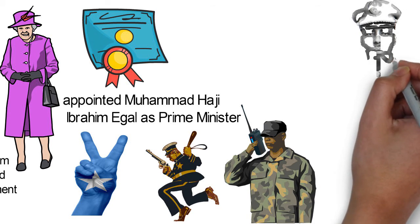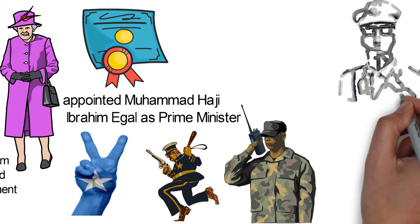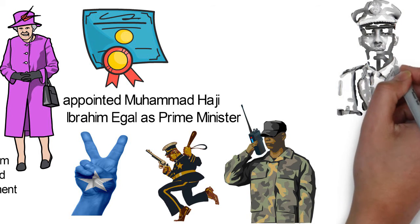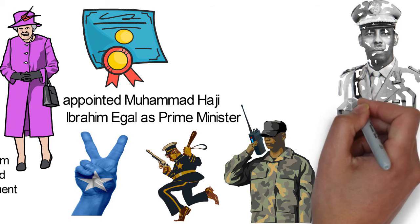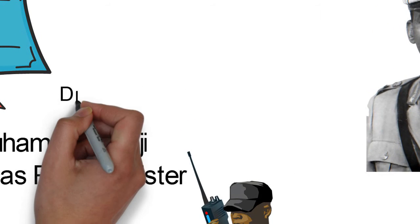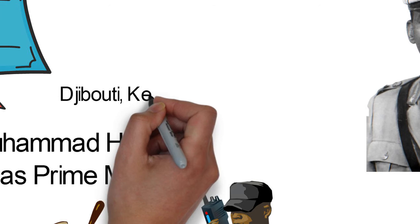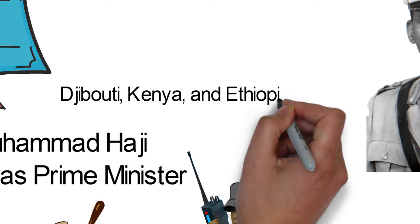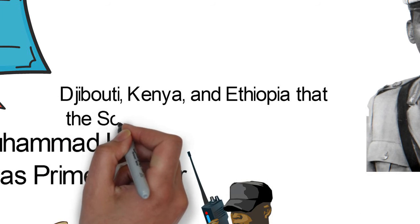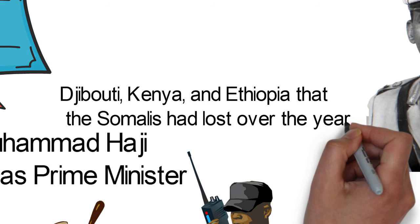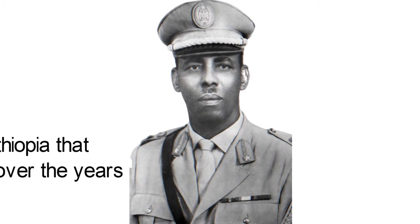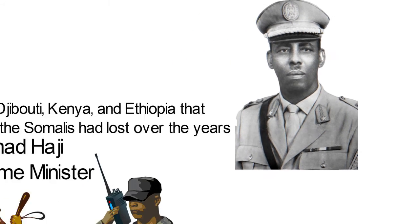Four years later, Somalia and Ethiopia waged a war over the Ogaden region. General Mohammed Siad Barre was the head of government at the time and held power for more than two decades. As he tried to invade the Ogaden region, he also attempted to regain other territories like portions of Djibouti, Kenya and Ethiopia that the Somalis had lost over the years. Two years after the war, he passed a new constitution into law and ruled as a dictator under a single-party system.